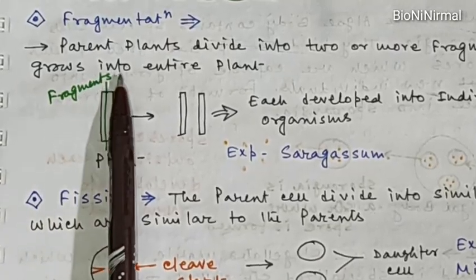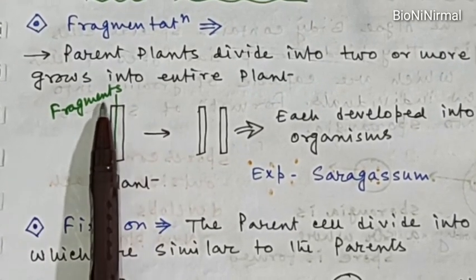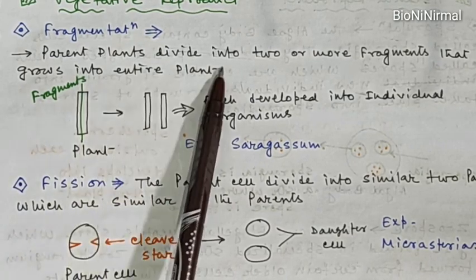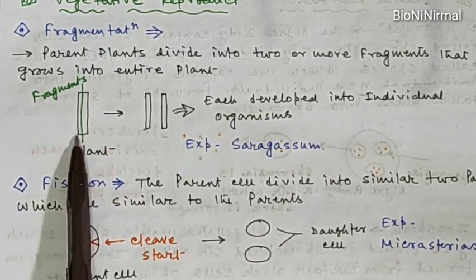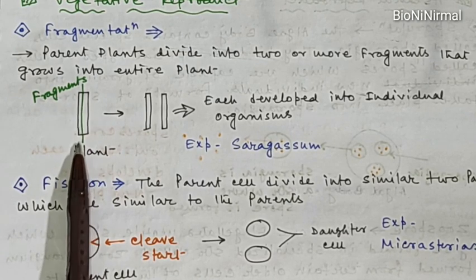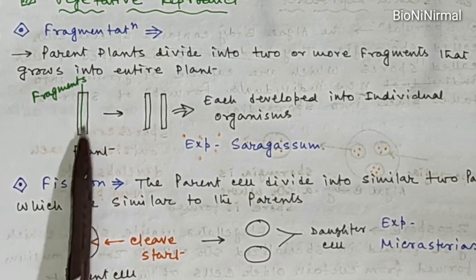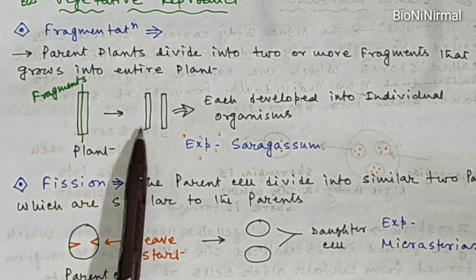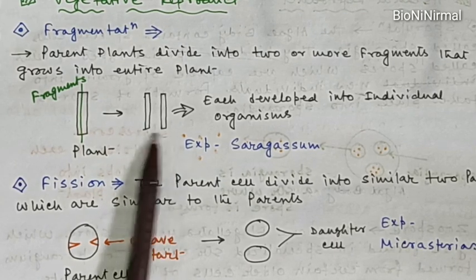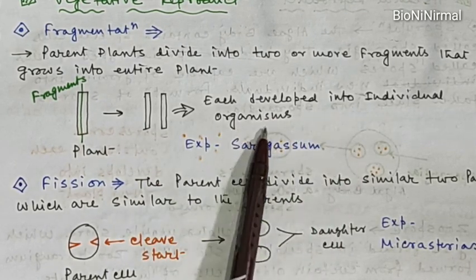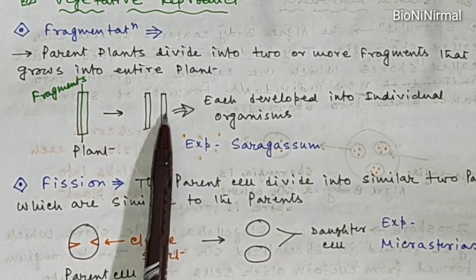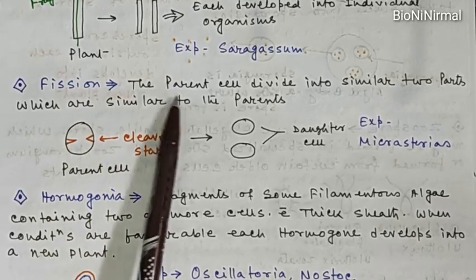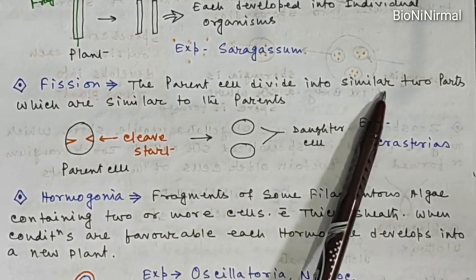The vegetative reproduction of algae occurs by many processes. The first one is fragmentation. In fragmentation, the parent plant divides into two or more fragments. Here you can see a parent plant where fragments originate and grow into entire plants. The plant body is fragmented into two parts and each fragment develops into an individual organism. Example: Sargassum.